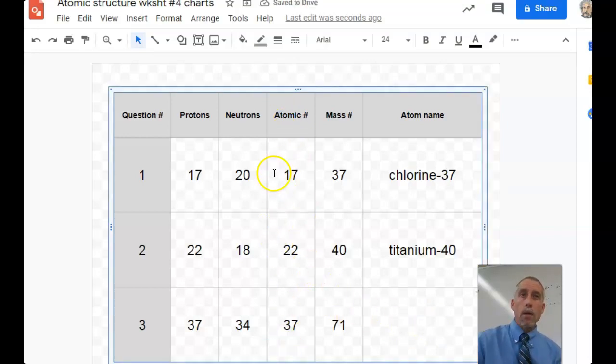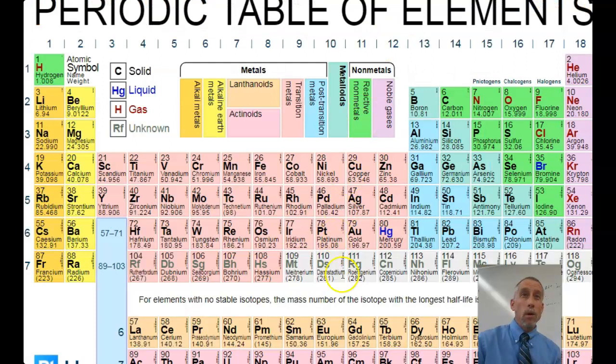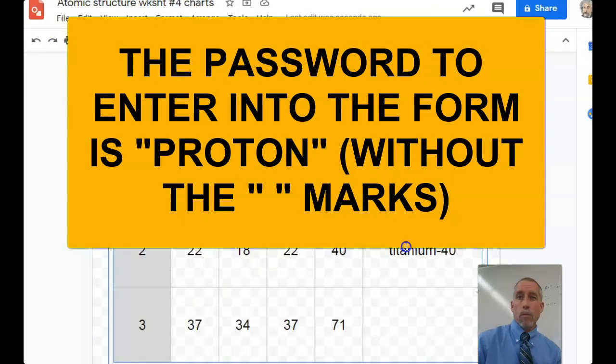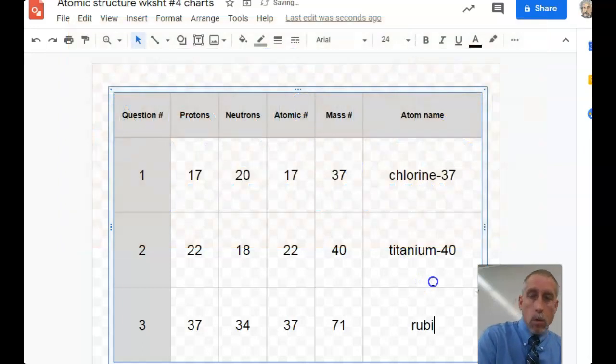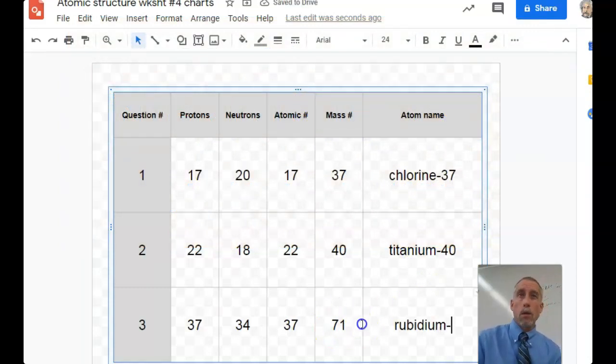And for the name, again, we always link the atomic number with the name. So back on the periodic table, we're looking for atomic number 37. Here it is over here. It's called rubidium. And so we'll put that in. And then the number that goes with it is always which particular type of rubidium atom is this. This is the one with a mass of 71. So it's got 37 protons and just 34 neutrons. There are other rubidium atoms that have different numbers of neutrons.